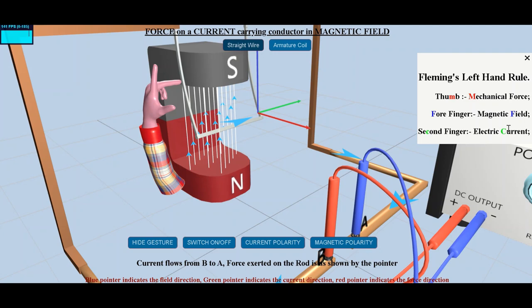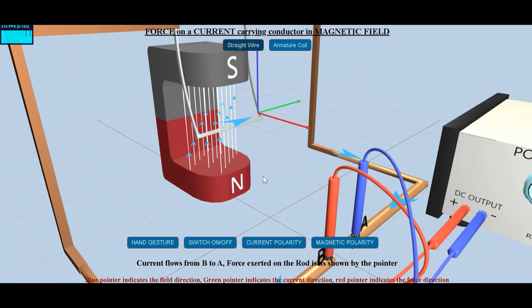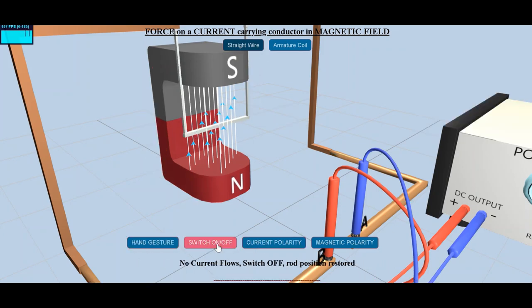Fleming's left hand rule states that if we point the second finger in the direction of the current and the first finger, forefinger, in the direction of the field, the thumb will show the direction in which the wire moves.